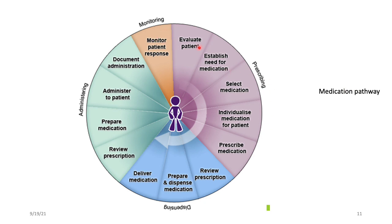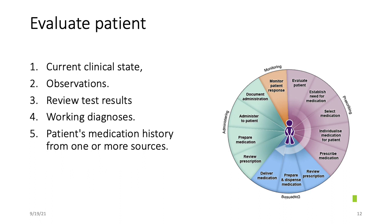Prescribing begins with patient evaluation: evaluate the patient, establish the need for medication, select medication, individualize the medication for the patient, and then prescribe appropriately. Patient evaluation involves assessing the presenting symptom, current clinical status, performing an appropriate physical exam, doing relevant tests, making a working diagnosis, and taking a detailed medication history from more than one source.